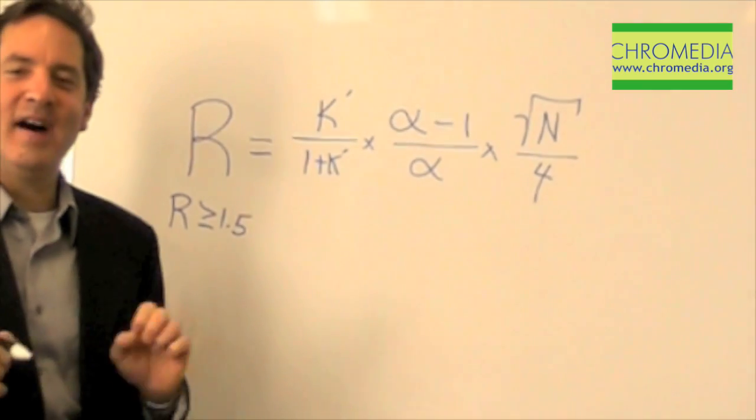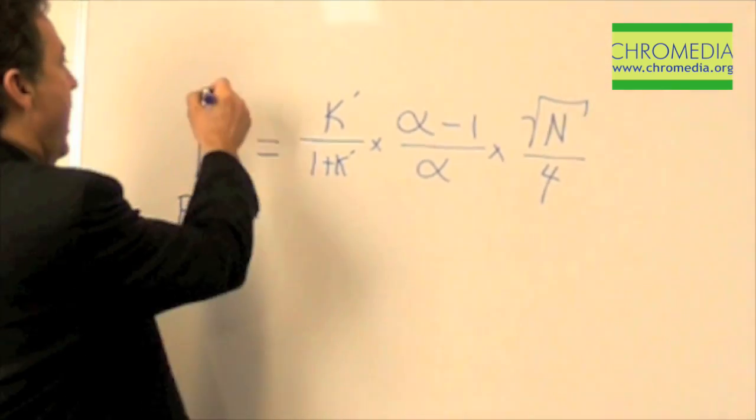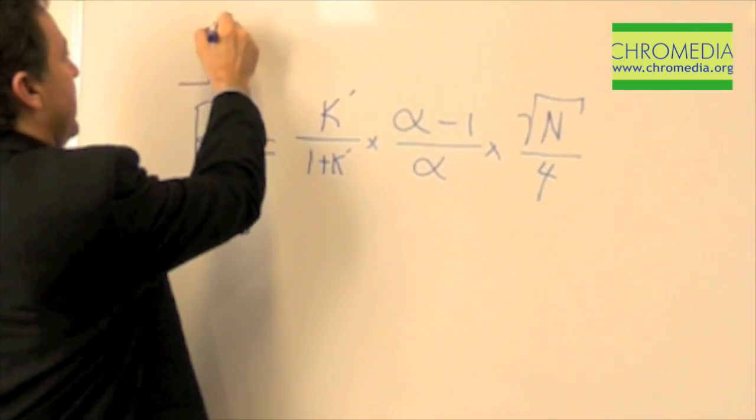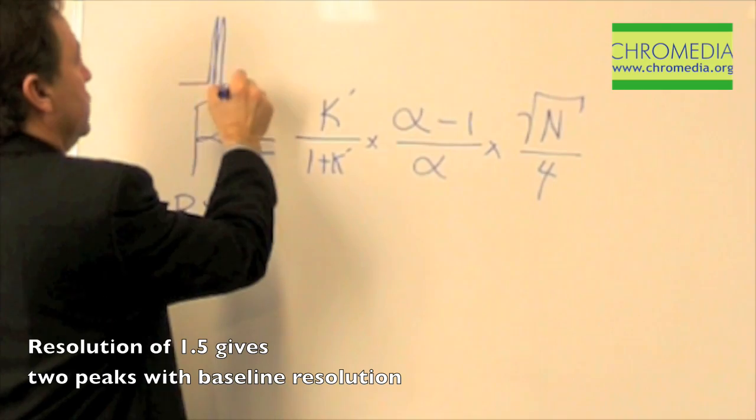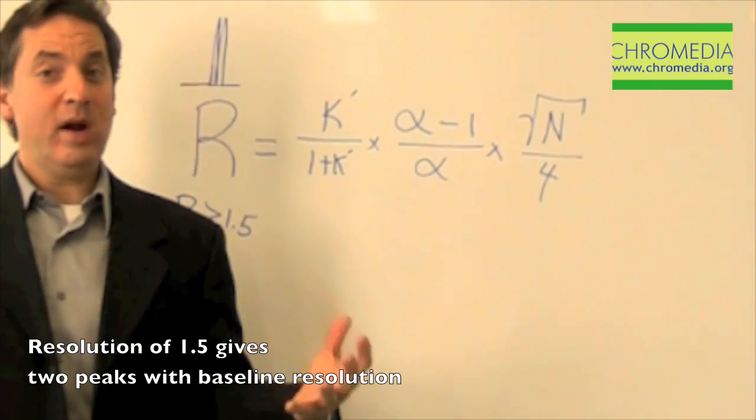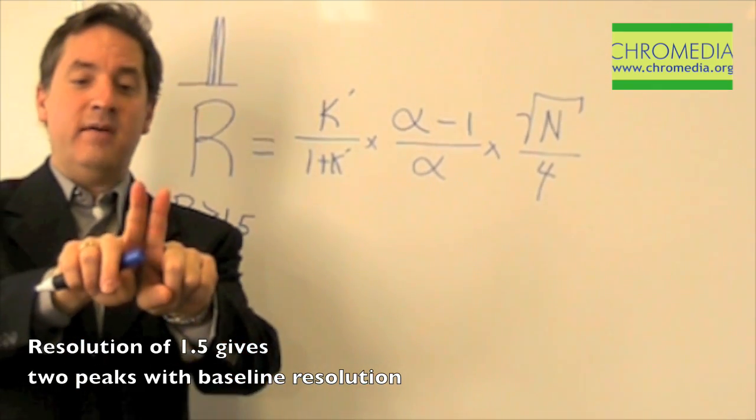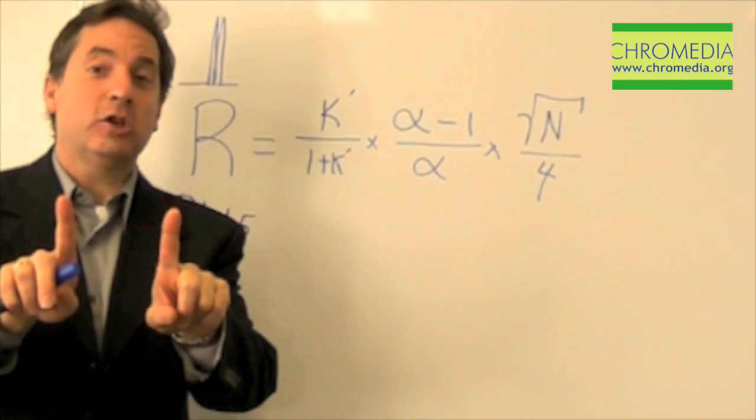1.5 defines baseline resolution. It means if I have two peaks, and I just barely touch the baseline in between them, then I have a resolution of 1.5. If your resolution is greater than 1.5, then you have empty spacing between the peaks. That's not such a bad thing. In fact, that's a good thing.